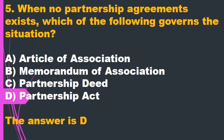Question 5. When no partnership agreement exists, which of the following governs the situation? A. Article of association. B. Memorandum of association. C. Partnership deed. D. Partnership act. The answer is D.